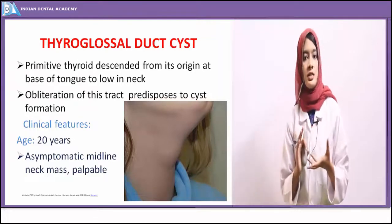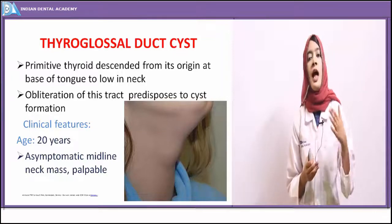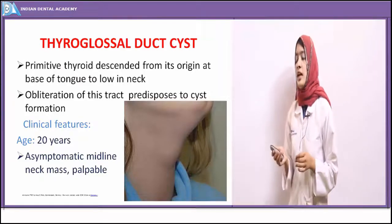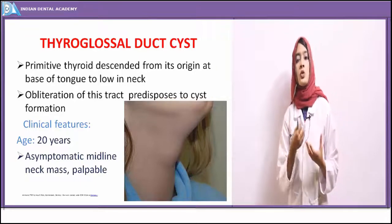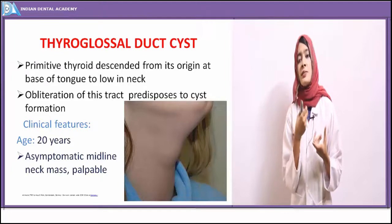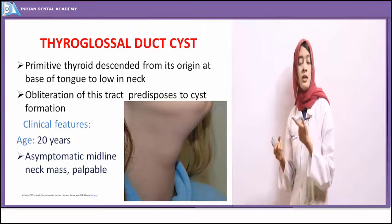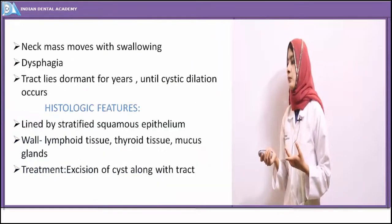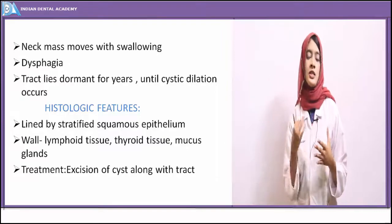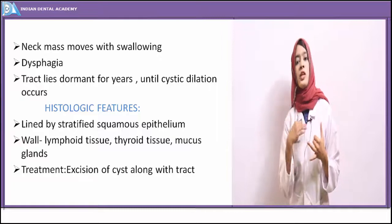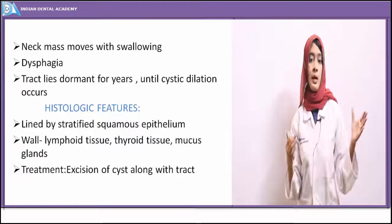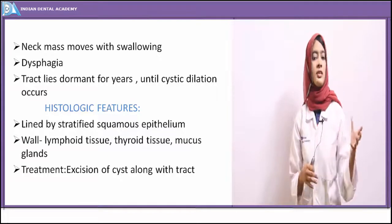This cyst is frequently seen in younger individuals below 20 years of age. The thyroglossal cyst may develop but the patient may not notice it until after a decade. It presents as an asymptomatic midline neck mass. Since the thyroid gland descends near the hyoid bone, this cyst presents as a neck mass that moves with swallowing — which is the diagnostic feature clinically. The patient may also complain of difficulty in swallowing or speaking.